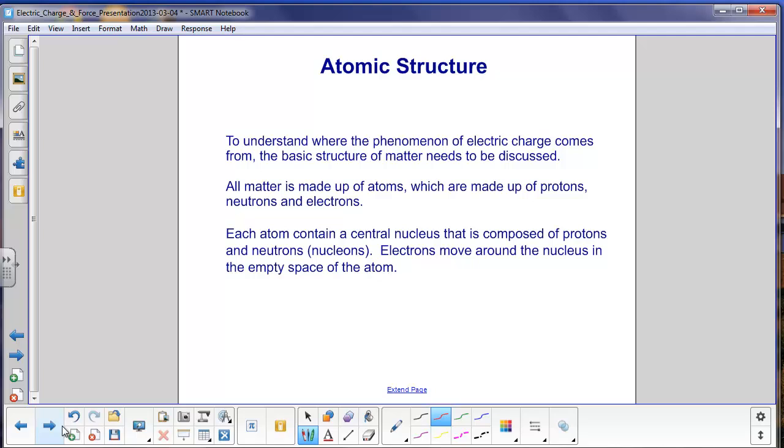All matter is made up of atoms, which have a central nucleus containing protons and neutrons that are surrounded by an electron cloud, whereby electrons are free to move about the empty space in the atom. Late 20th century physics shows how neutrons and protons are further made up of quarks, and electrons are basic point particles with no underlying structure.